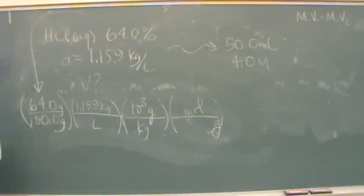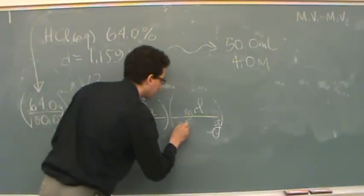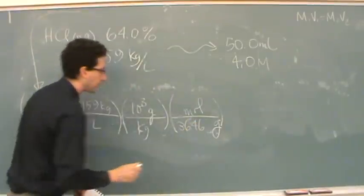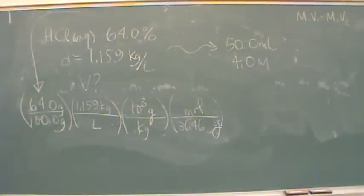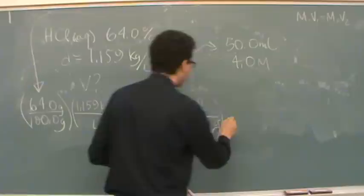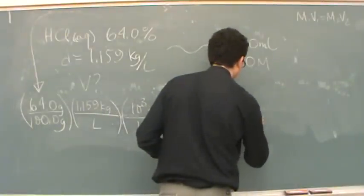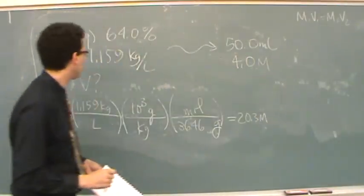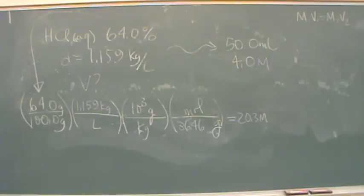And it's 36.46 from the periodic table, grams per mole. This is the molarity. And this happens to be 20.3 molar. And that's for the HCl to start off with. Notice we're going to four in the end.